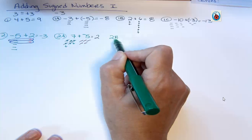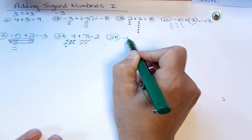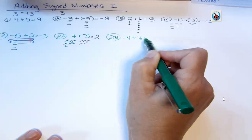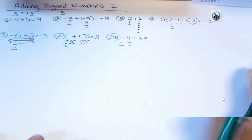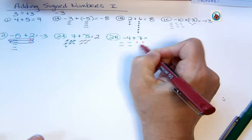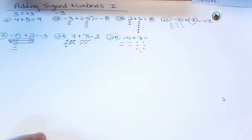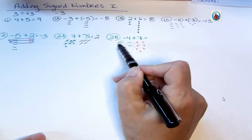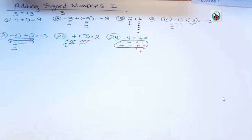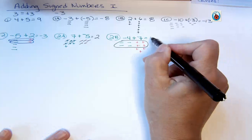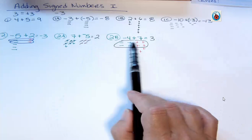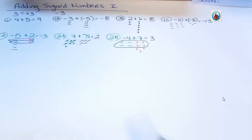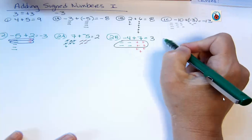Example 2b: negative four plus seven. Do I have more positives or more negatives? I have four negatives and seven positives. These four negatives cancel four of the positives, and I still have three positives left over, so my answer is positive three. It doesn't matter which number comes first — what matters is what do you have more of? Do you have more negatives or more positives?